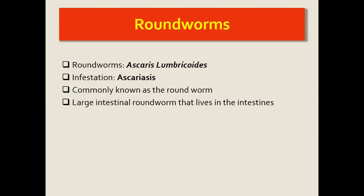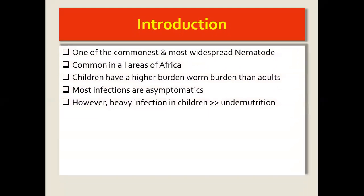Ascaris lumbricoides are commonly known as roundworms. They are nematodes and are normally found in the large intestines, where they live and shed their eggs. It is one of the commonest and most widespread nematodes — the nematode that most people know. It is found almost everywhere in Africa, and children are the ones who basically bear the highest burden of this disease.